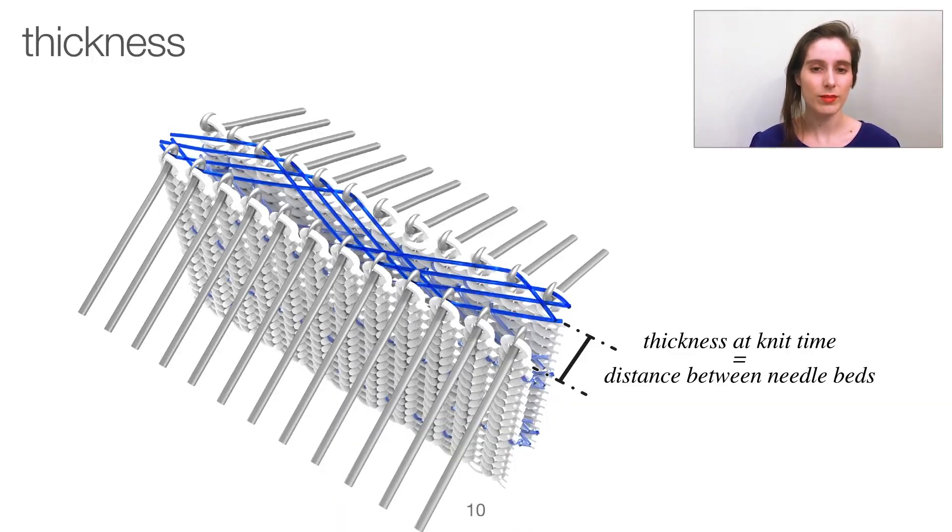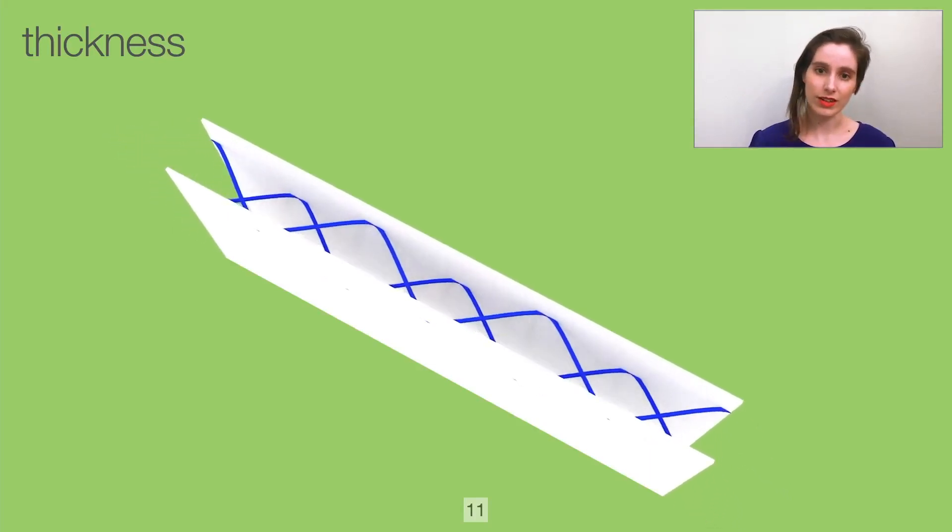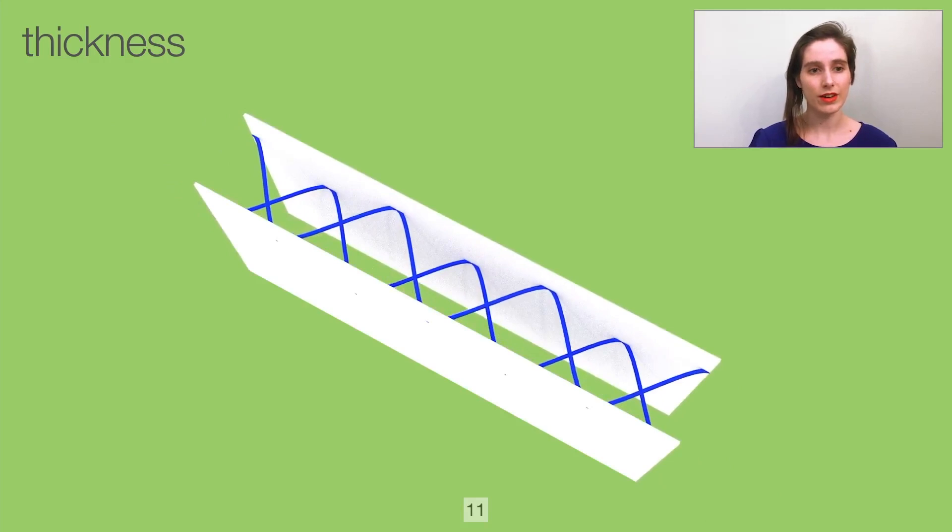The thickness of a spacer fabric might be a surprise to those of you who know what a V-bed knitting machine looks like because at knitting time the two faces of the fabric are constructed at a set distance apart. That's the distance between the needle beds. It's a property of the knitting machine itself and can't be changed. To produce a thick fabric like the spacers, the faces are knit with an elastic under tension. After knitting, the elastic causes the faces to shrink laterally and the semi-stiff filler yarn acts like a jacks mechanism that pushes the faces apart.